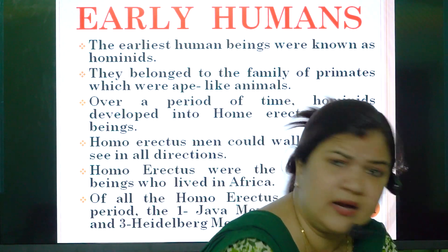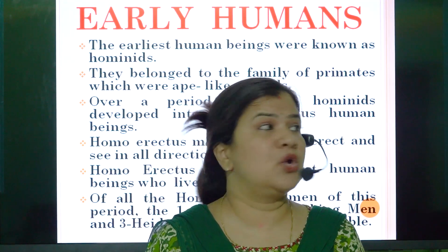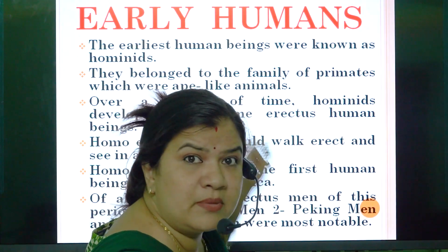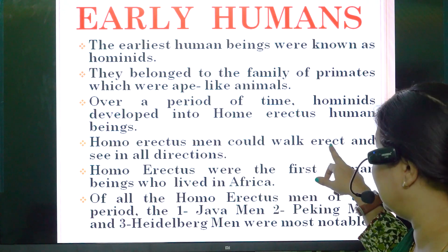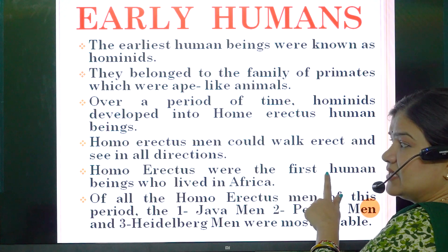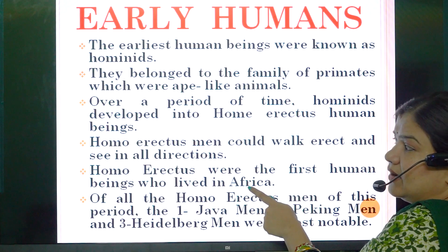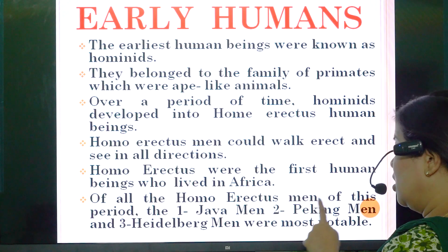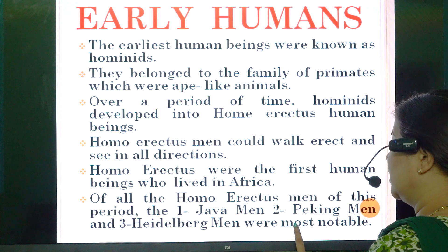Homo erectus men could walk erect — that is, straight — and see in all directions. Homo erectus were the first human beings who lived in Africa. Of all the Homo erectus men of this period, the Java men, the Peking men, and the Heidelberg men were the most notable.